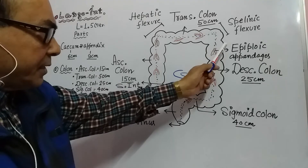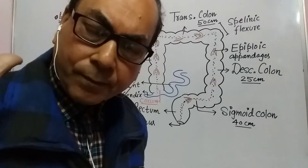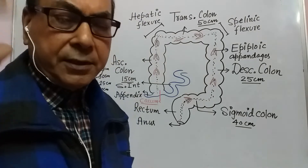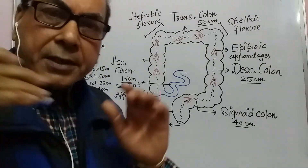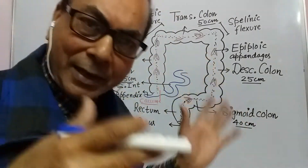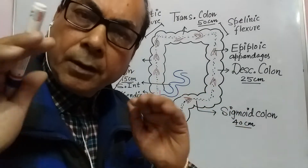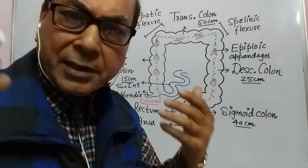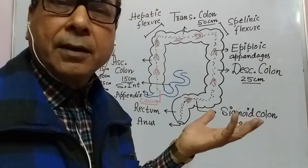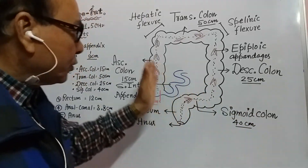In the large intestine there are some structures called epiploic appendages. These are fat-filled pouches present throughout the large intestine, whose function is currently unknown — no definite function has been found for them.